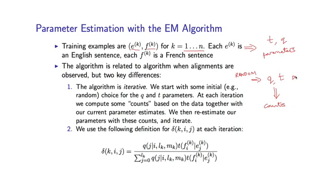Actually, based on we have the data. This is the E_k, F_k pairs. And that, together with our current guess at the parameters, will give us some counts. And from those counts, we'll re-estimate the Q and T parameters. So we're going to have an iterative method where at each iteration, we start with some values for Q and T, and we calculate some new values for Q and T.